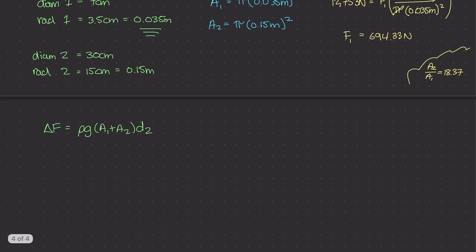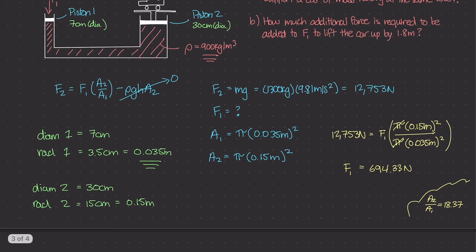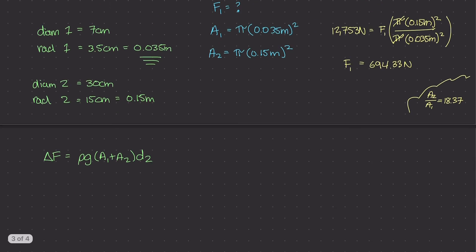But the important thing to remember is that this distance 2 is the distance that piston 2 is moving up. And so the question is asking how much additional force is required to move the car up or piston 2 up by 1.8 meters. So this 1.8 meters is what our D2 is going to be. And we can use all of these values to basically calculate delta F. So let's do that.